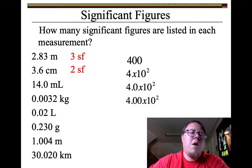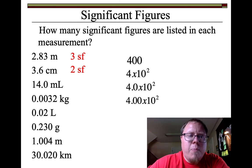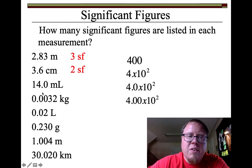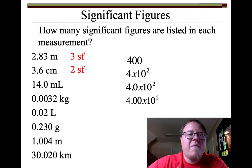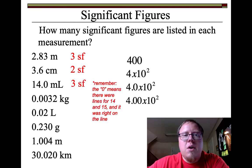14.0 — well, the 1 and the 4 for sure. The 0 after the decimal, though — did I have to write that? Not really, but it's right after a decimal place, and that follows that third rule. I wrote that 0 there just to show it was right on the line for 14, and I probably have a 15 milliliter line. So I can get a tenths place — three significant figures.